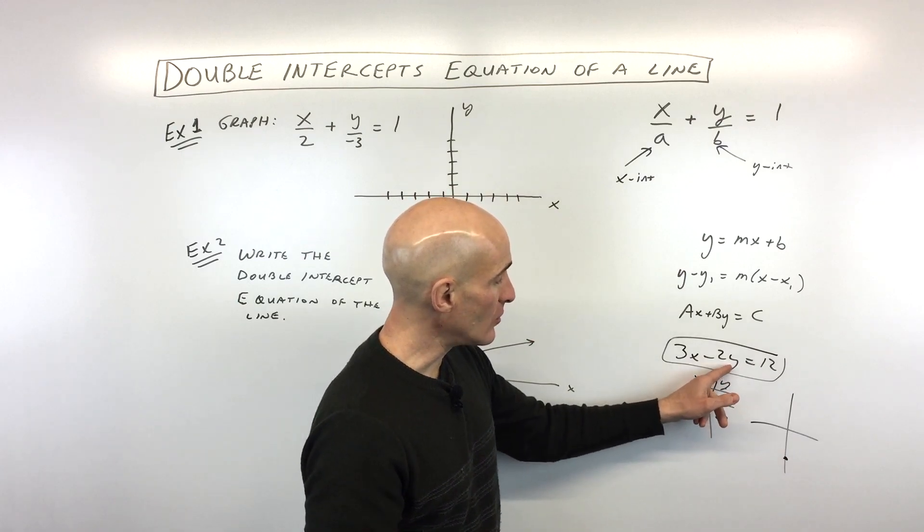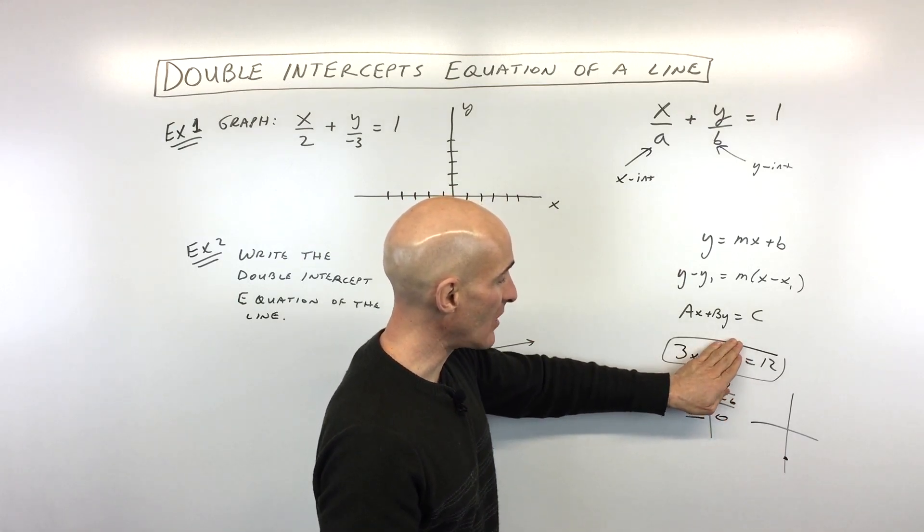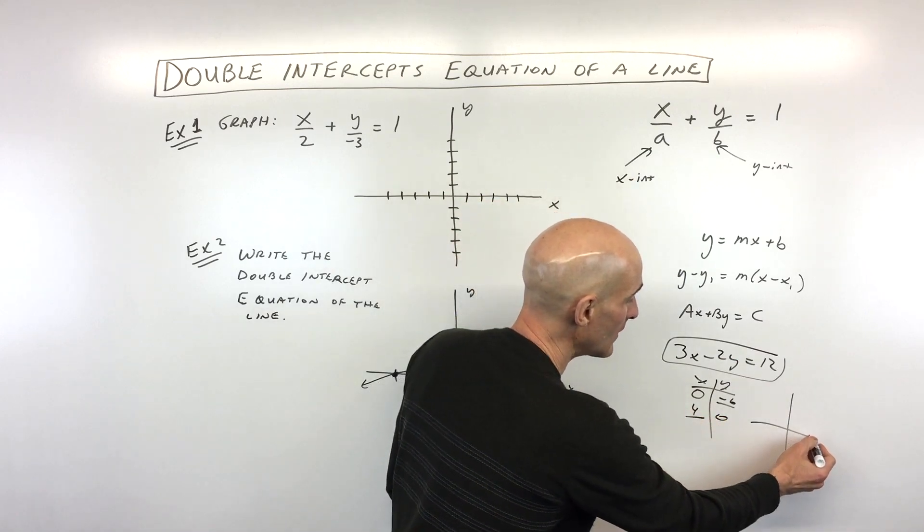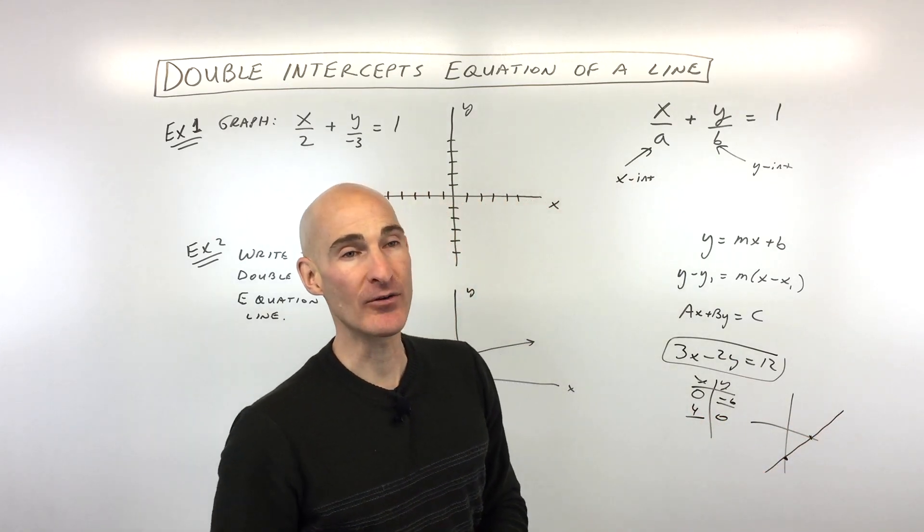If we set y to 0, anything times 0 is 0, so that cancels out this term. And if we divide by 3, you can see the x-intercept is 4. Once we have those two points, we can easily graph our line.